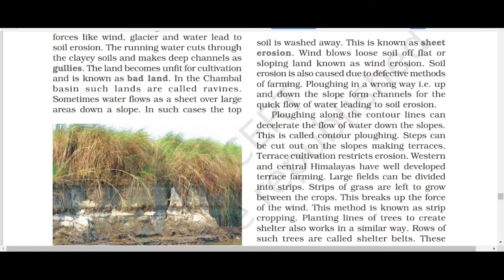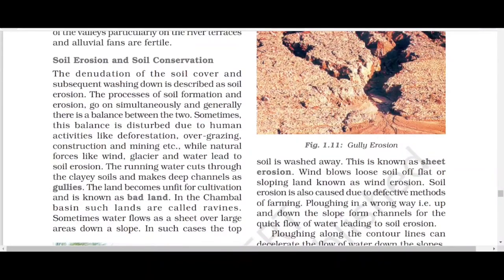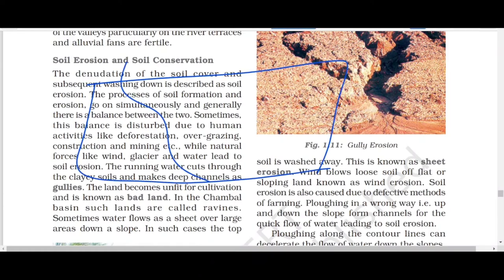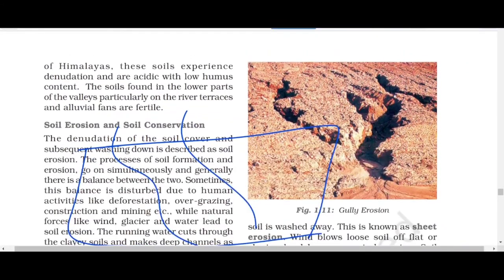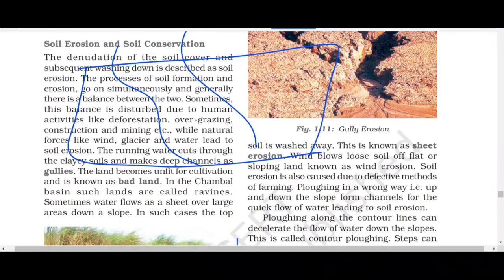The second type is sheet erosion. Sometimes water flows as a sheet over a large area down a slope. If the soil is washed away across a flat plain area due to running water or rainfall, this is known as sheet erosion.